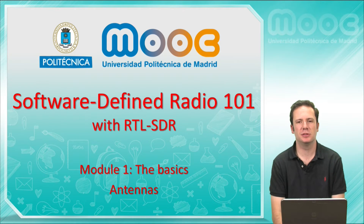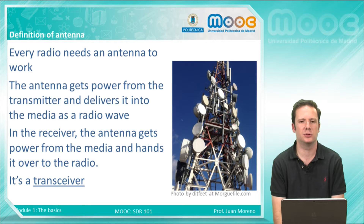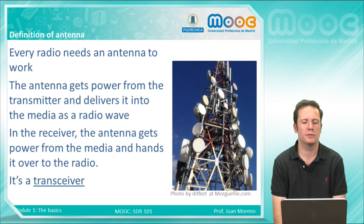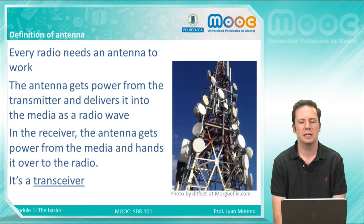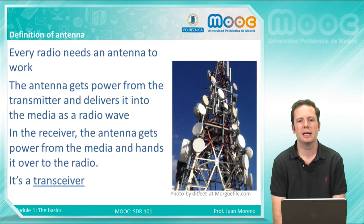In this video we will learn about one basic hardware on every radio communication system: the antennas. Every radio needs an antenna to work, and the mission of the antenna is to get power from the transmitter and deliver it into the air, into the media, as a radio wave. Also on the receiver side of the system, the antennas get this power from the media, from the air, and hand it over to the radio. So antennas are nothing more and nothing less than transceivers.